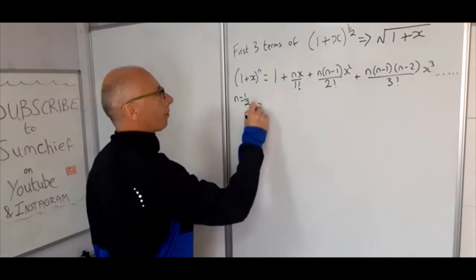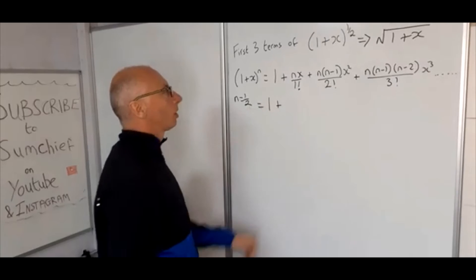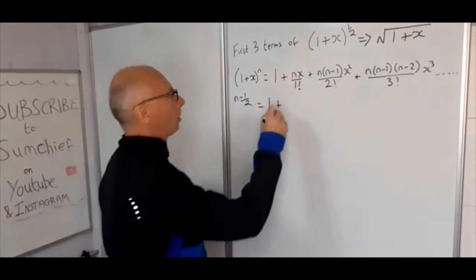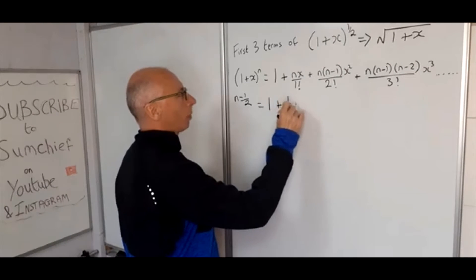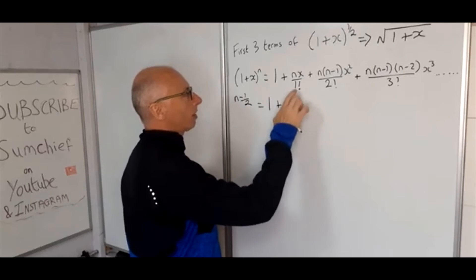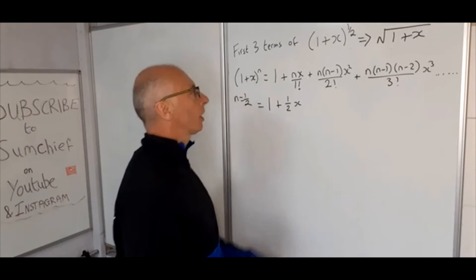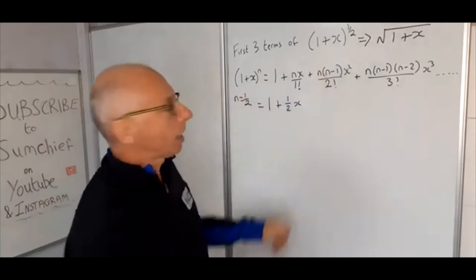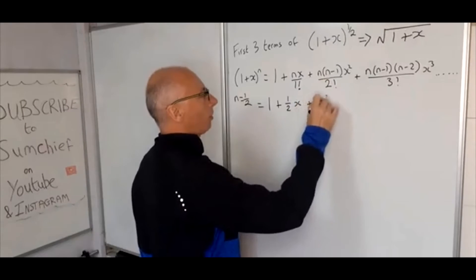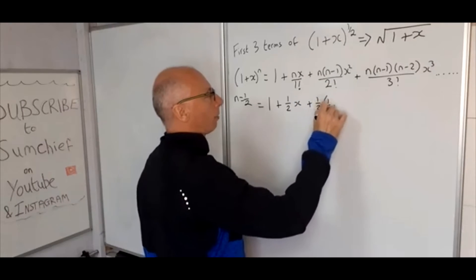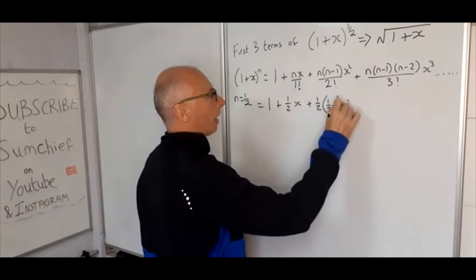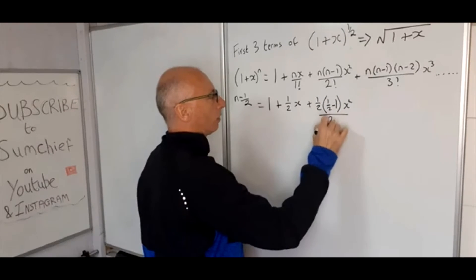1 plus n is a half, so whenever we see an n we put in a half, and then the x stays. 1 factorial we can just leave. n times (n-1), so that's plus (1/2) and then (a half minus 1) x² over 2.